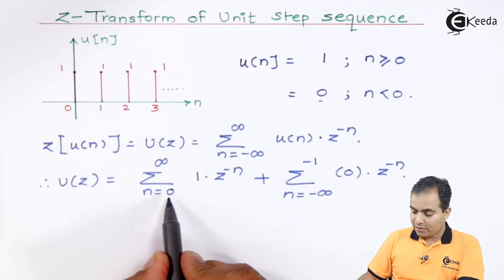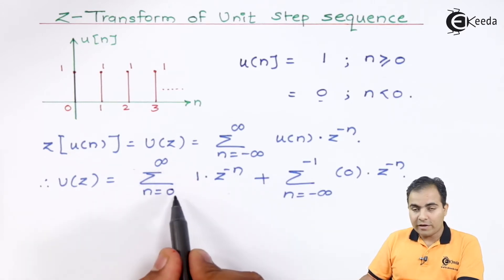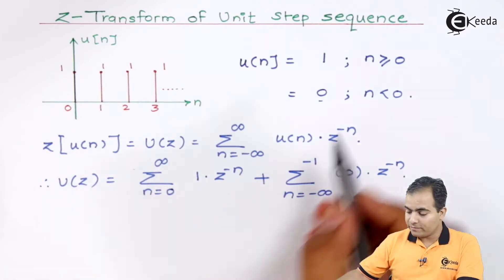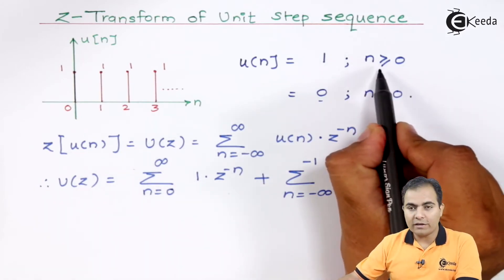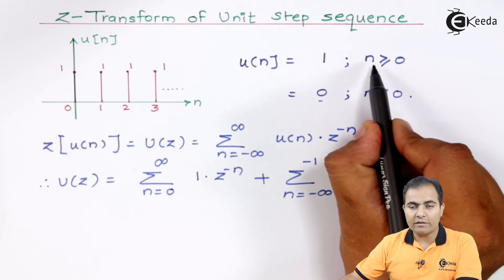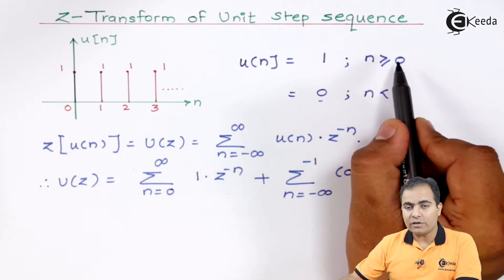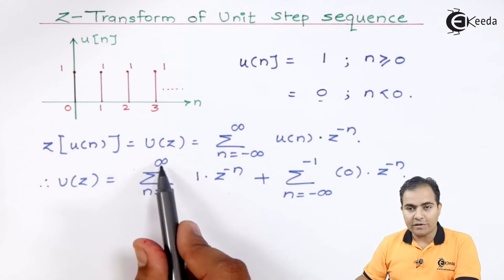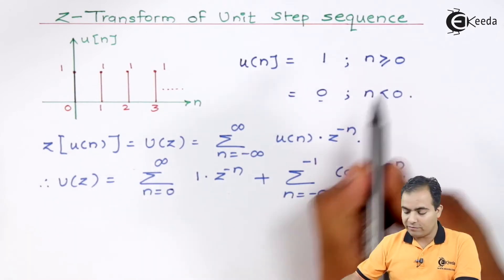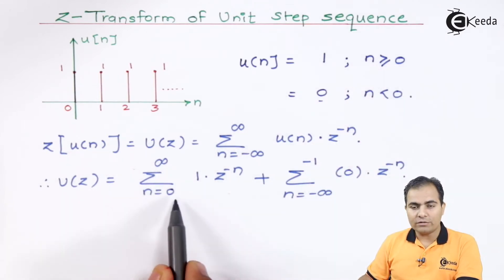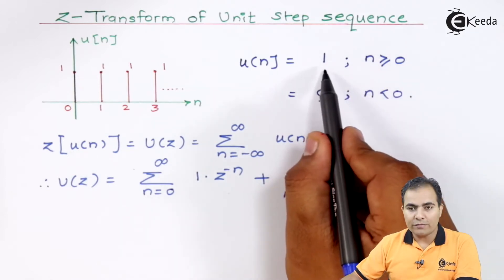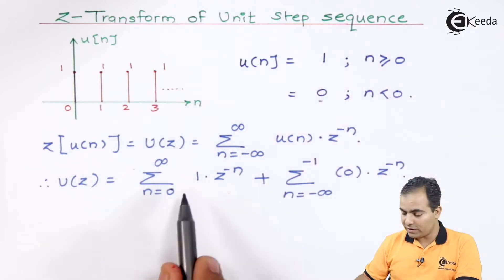I have substituted the limits: from n = 0 to infinity. From n = 0 to infinity, u(n) has amplitude 1. n ≥ 0 means the lowest value is n = 0 and the last value is infinity. For this overall region, the amplitude of u(n) is 1, which is why I have written 1.